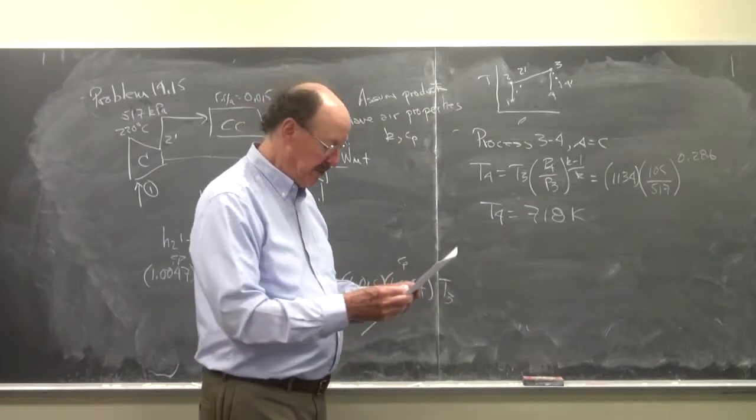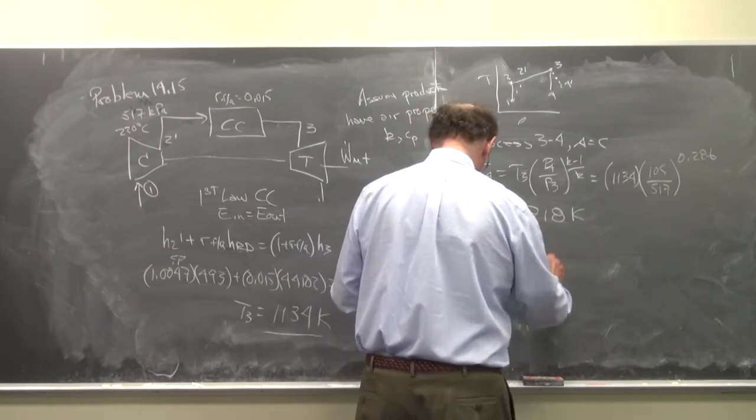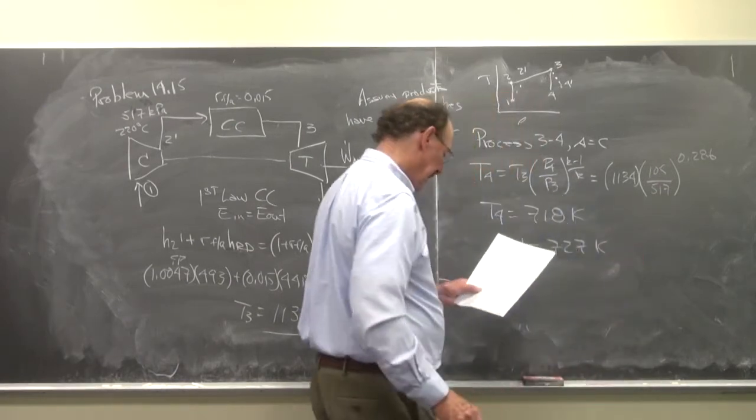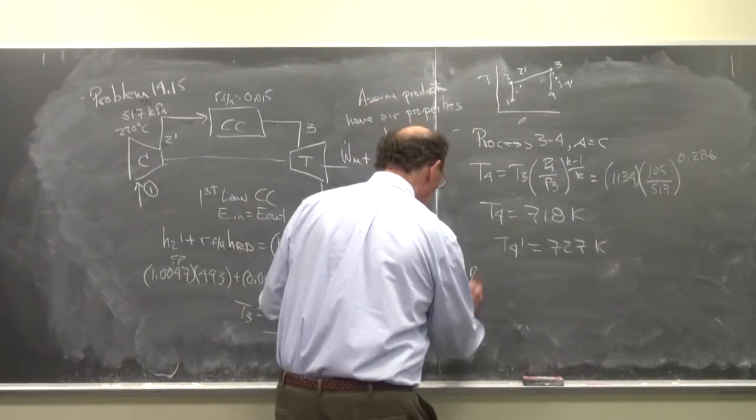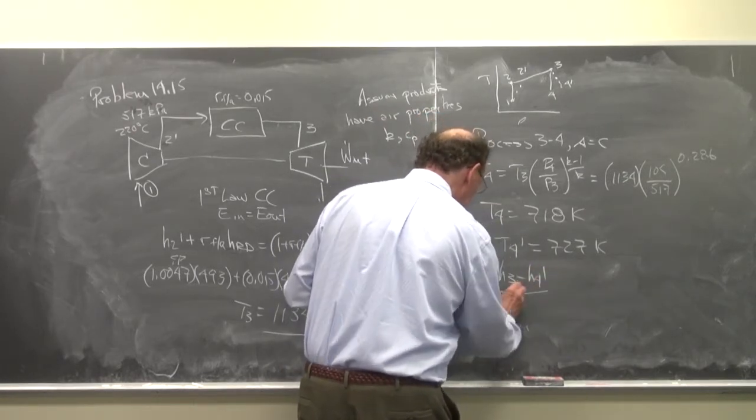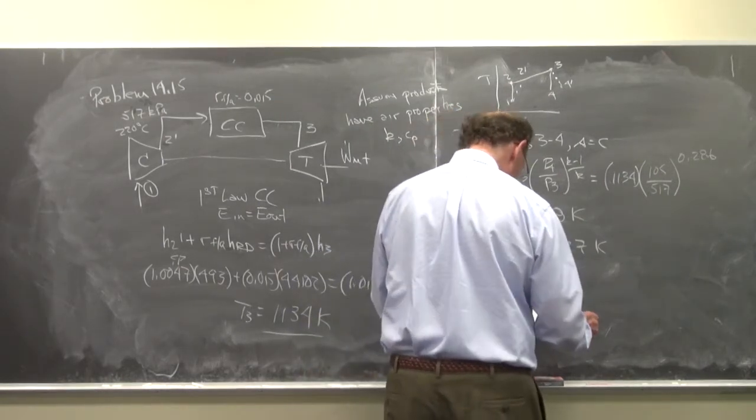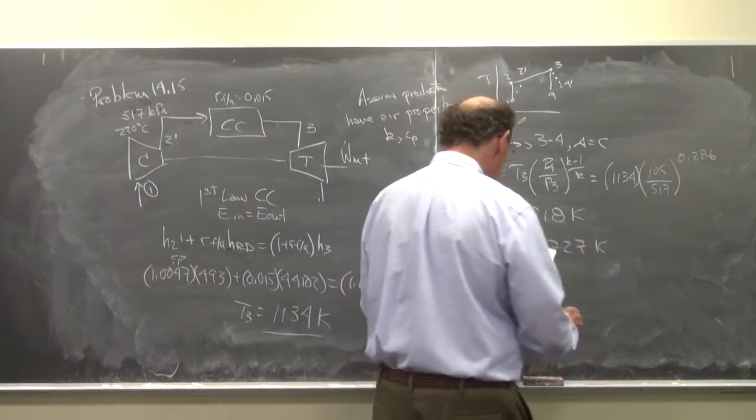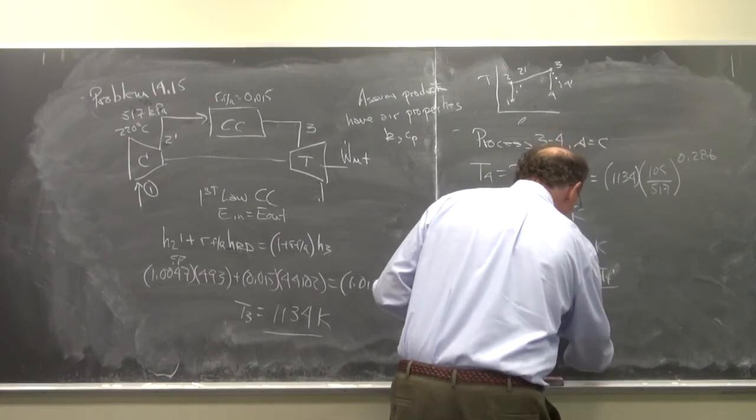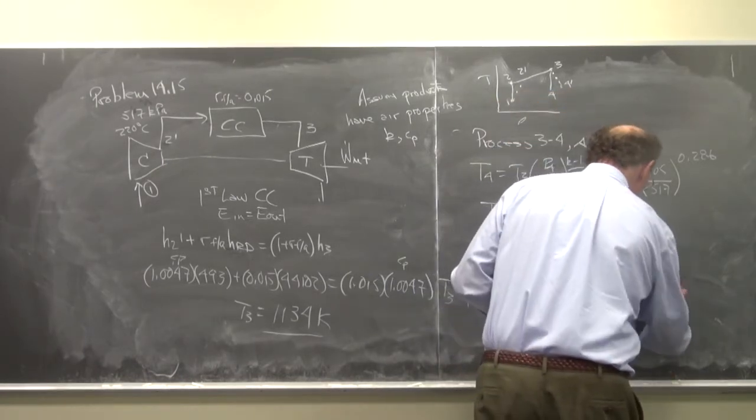So I'm able to find the isentropic value. We were given T4 prime is equal to 727 degrees K. And now I can find the turbine efficiency. Eta sub T is equal to H3 minus H4 prime over H3 minus H4. Because the Ccp's are the same, this is T3 minus T4 prime over T3 minus T4. And if you substitute in there, you get 0.98.